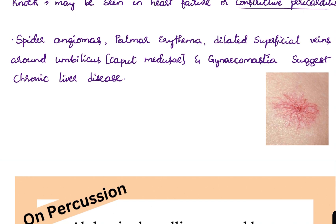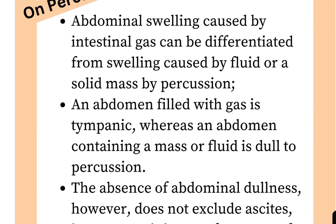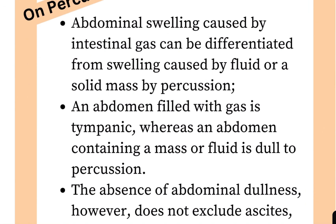Other signs of chronic liver disease include spider angiomas, as seen in this image, palmar erythema, dilated superficial veins around the umbilicus called caput medusae, and gynecomastia.